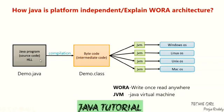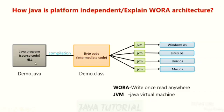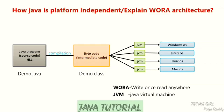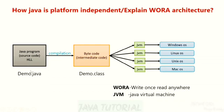The Java program is also called as source code, which will be in high-level language. High-level language means the source code will be in human-understandable form. Once after writing the Java program, we need to save that program with any name we wish, with a .java extension.